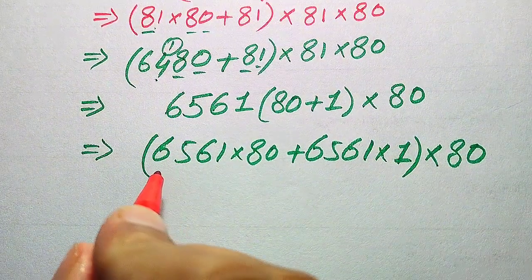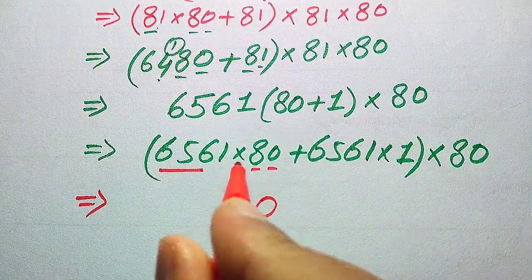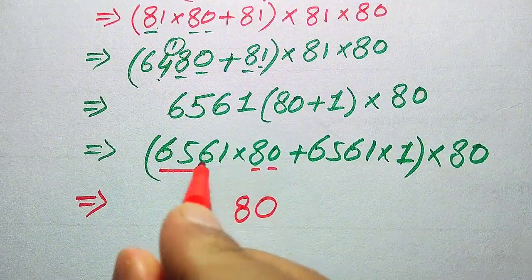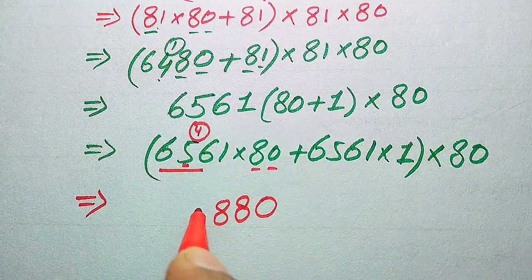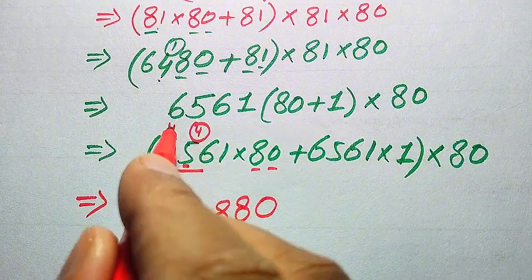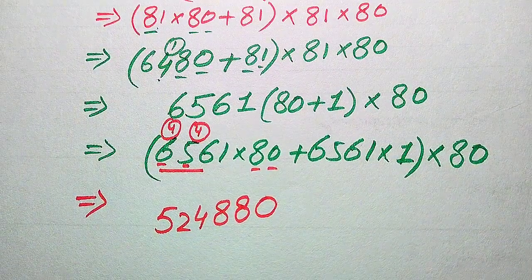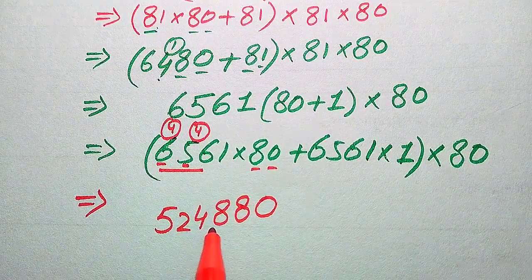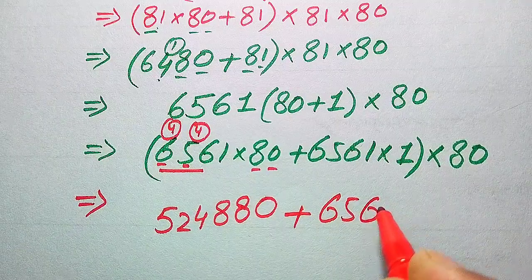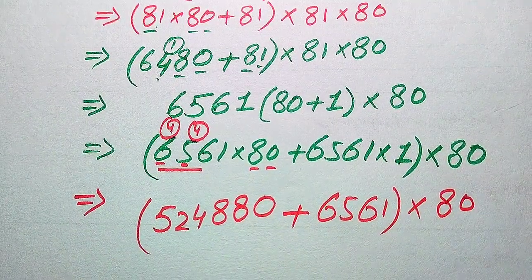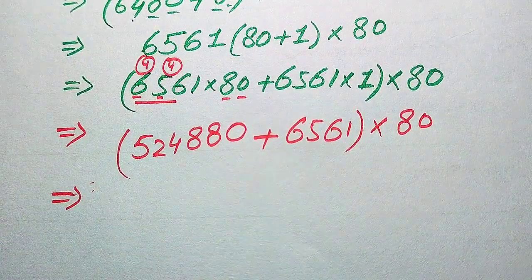We consider the one-digit and two-digit parts. 0 times 6561 is 0; 8 times 6561: 8 ones are 8, 8 fours are 32 write 2 carry 3, 8 fives are 40 plus 3 is 43 write 3 carry 4, 8 sixes are 48 plus 4 is 52. So 6561 times 80 equals 524880. Plus 6561 times 1 equals 6561, and this is multiplied by 80.